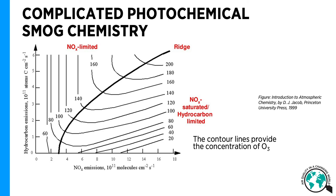The ridge indicates the optimal emissions of NOx and hydrocarbons that lead to a maximum concentration of ozone. The area to the left of the ridge is the NOx-limited regime, where the concentration of ozone increases with increasing NOx and is insensitive to the emissions of hydrocarbons. The area to the right of the ridge is the hydrocarbon-limited regime, where the concentration of ozone increases with increasing hydrocarbon emissions and decreases with increasing NOx emissions.